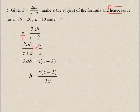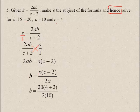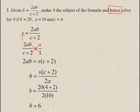Once I have manipulated for b, I go ahead and solve for b by substituting the given values. I know s is equal to 20, c is equal to 4, and a is equal to 10. Using a calculator: 4 plus 2 is 6, 6 times 20 is 120, 120 divided by 20 gives an answer of 6. There are no units given, so b is simply equal to 6. Step by step we will get you to the answer — do not rush, because that is where you are going to be making errors.